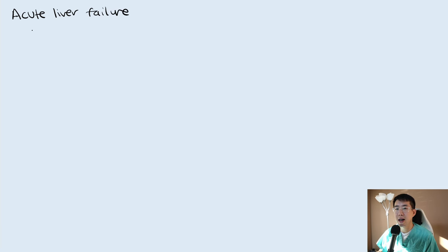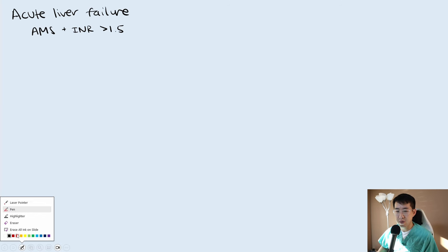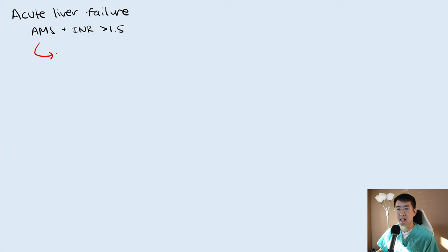Acute liver failure is defined by altered mental status plus an INR of greater than 1.5. This is a really important definition to know because it's actually pretty easy to get classified as acute liver failure, but the main reason this is so important is because this is an indication for us to consider liver transplantation.